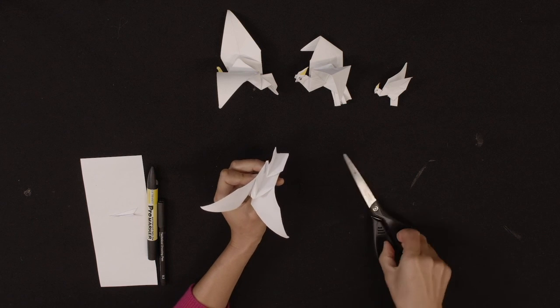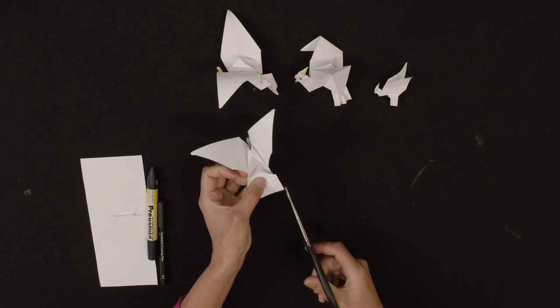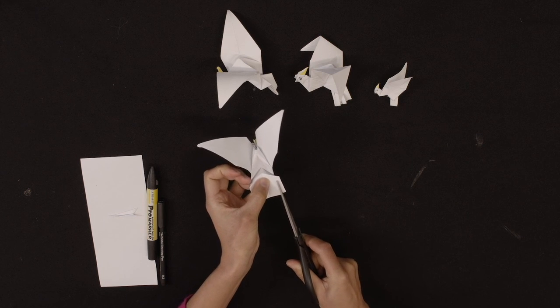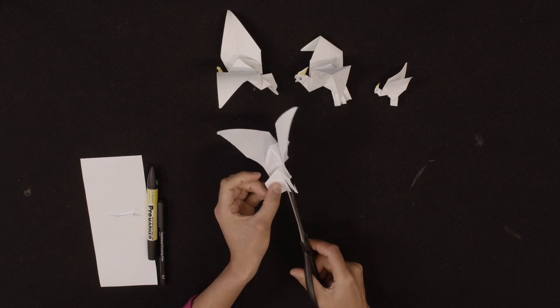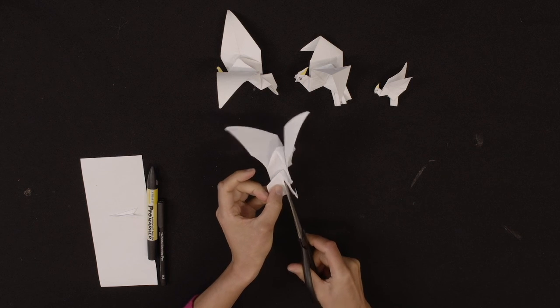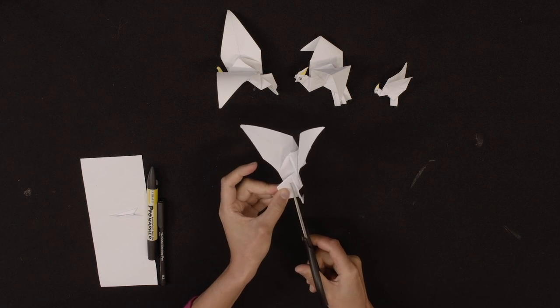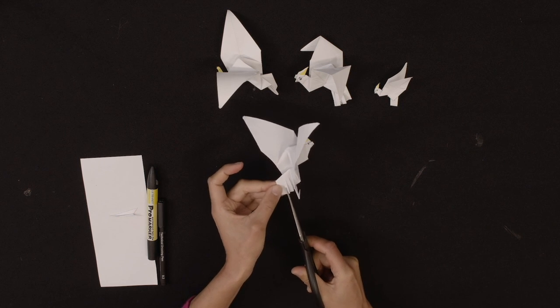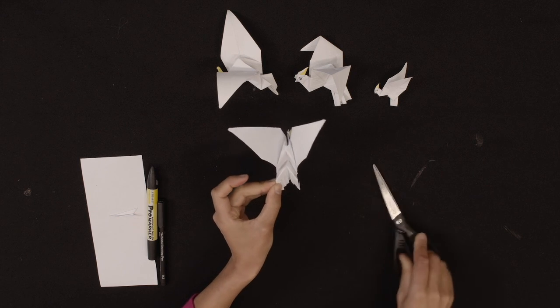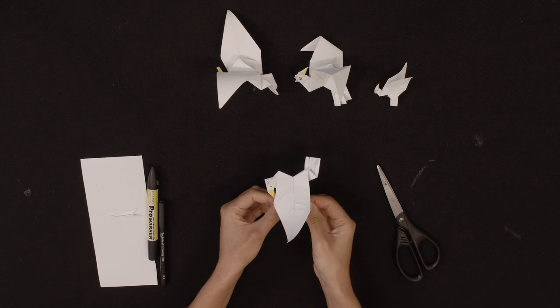And now just the tail, just with the scissors again. You can do lots or you can do just a few, just to give it some shape. Yeah, and then just give it the shape that you want and it's your first cockatoo.